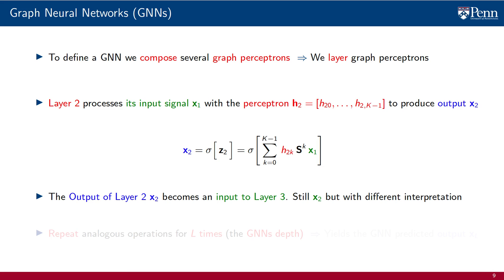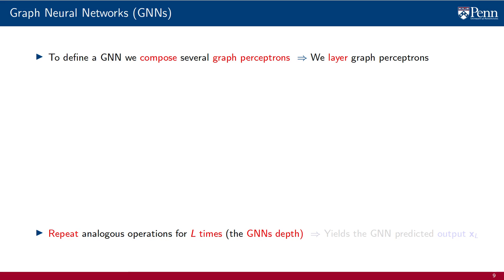The output of layer 2 becomes an input to layer 3, just as when we went from layer 1 to layer 2 — it is the same signal, just changing roles. Layer 3 processes the output of layer 2 with a specific perceptron, sends its output to layer 4, and so on. We repeat this process a total of L times. This L is the depth of the GNN — the total number of layers, the total number of perceptrons that we compose. The output of the last layer is x sub L, which is declared to be the output of the GNN.